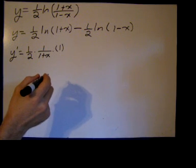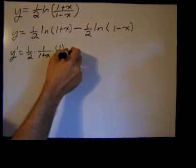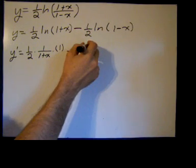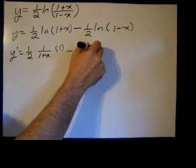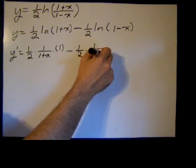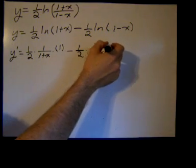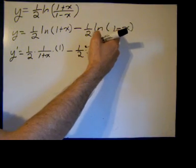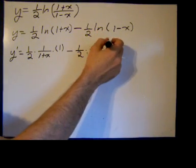And then technically it's one over the ln of the base, but the ln of e is just one, so we typically don't write it, minus one-half. Again, one over the argument is one over one minus x times the derivative of the argument, which is the derivative of one is zero, the derivative of negative x is negative one.